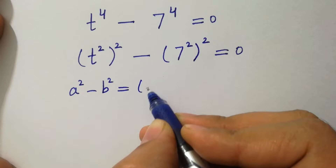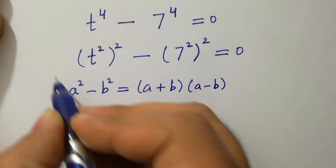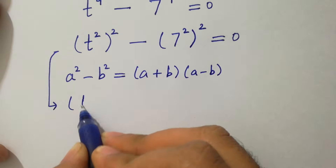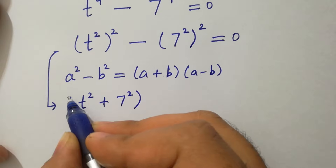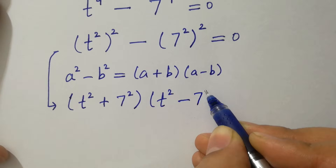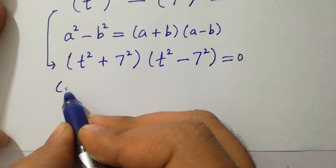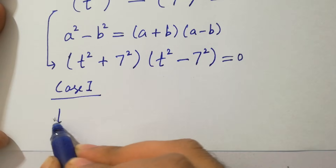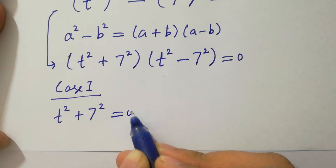By the formula a² minus b² equals (a plus b)(a minus b), we apply it now. We have (t² plus 7²)(t² minus 7²) equals 0.